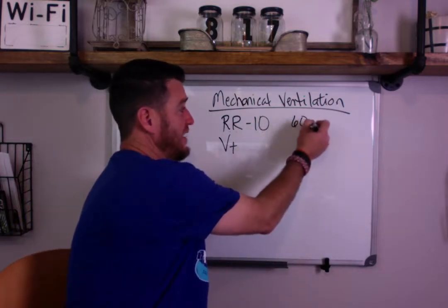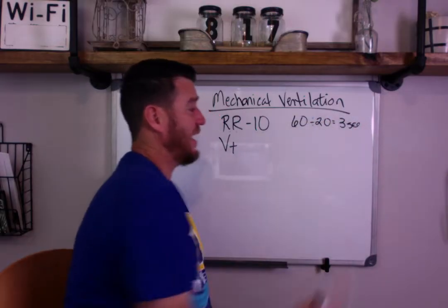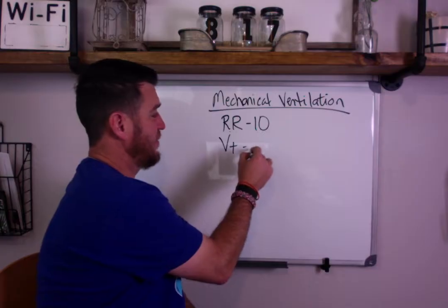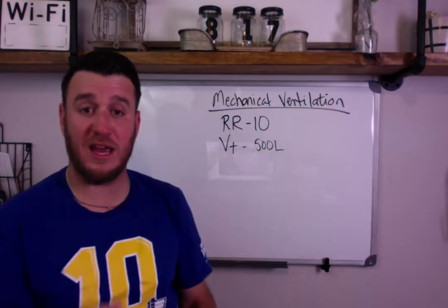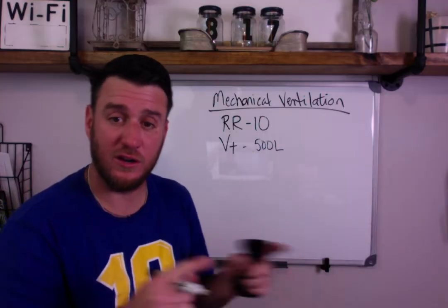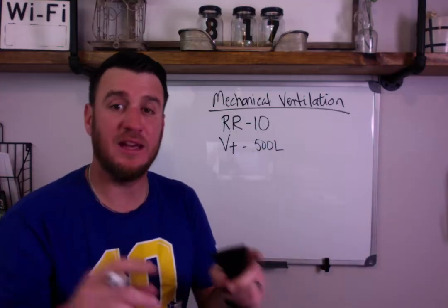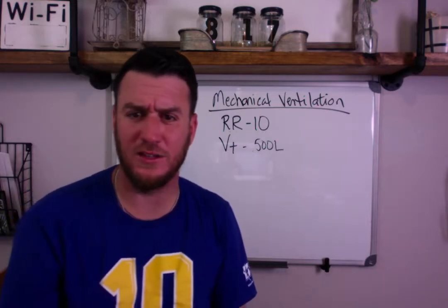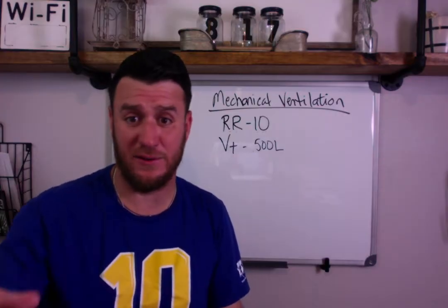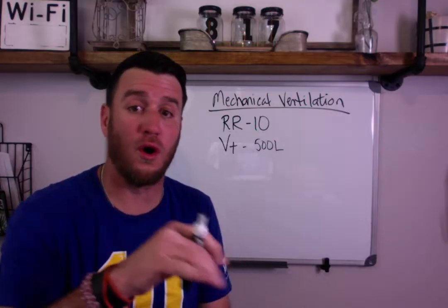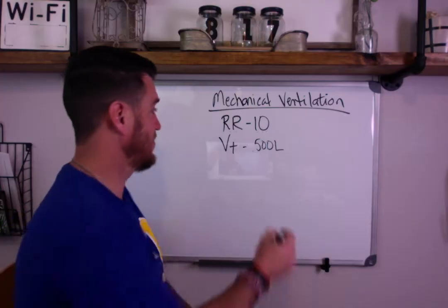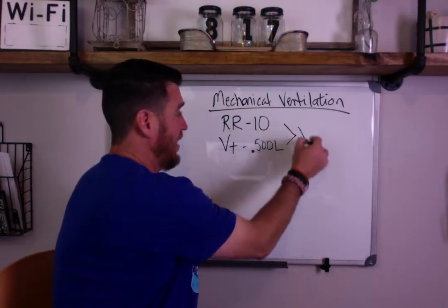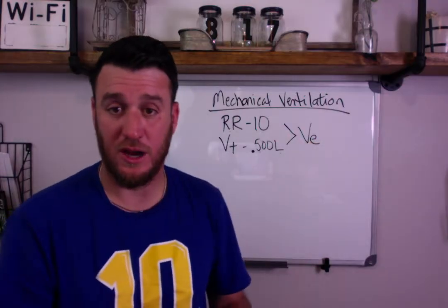If you set it on 20, you do 60 divided by 20 and you're going to get a breath every 3 seconds. So we know respiratory rate and we know tidal volume. Let's say we have a tidal volume of 0.5 liters, or 500 milliliters. You've got to be able to go between liters and milliliters pretty easily in respiratory therapy — otherwise you start saying things like 'I have a tidal volume of 500 liters.' No, you don't — you're killing somebody. What you have is 500 milliliters or 0.5 liters. So be comfortable moving in and out of those.